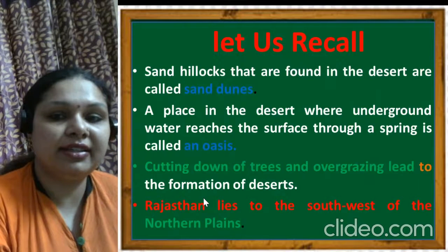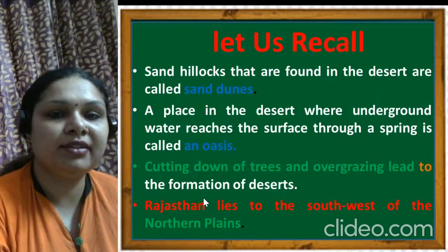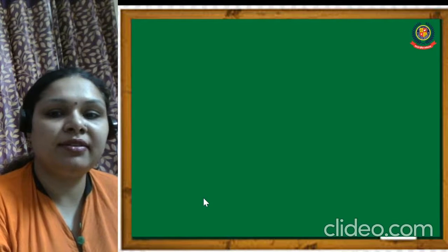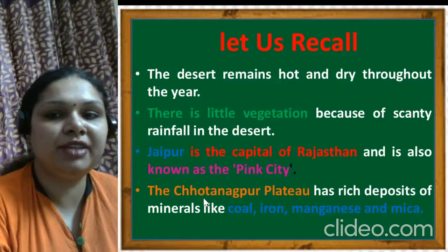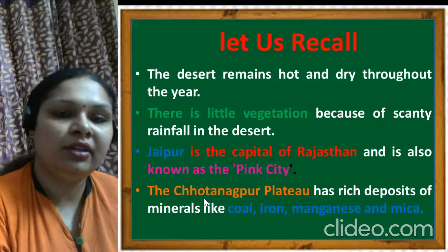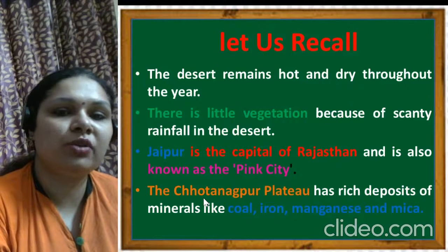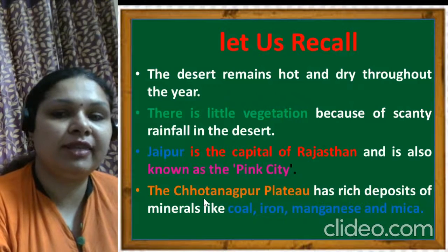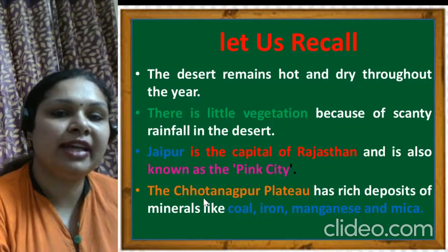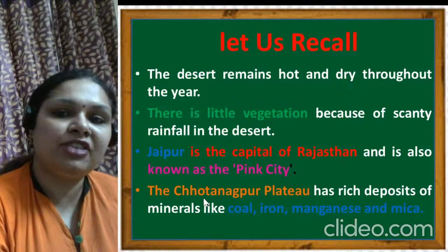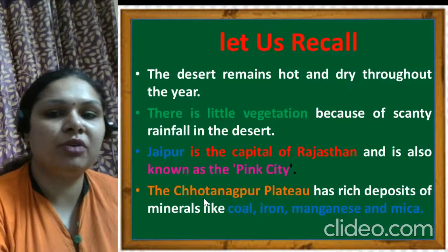Rajasthan lies in the southwest of the northern plains. The desert remains hot and dry throughout the year because there is little vegetation due to scanty rainfall, and the climate remains hot and dry throughout the year.